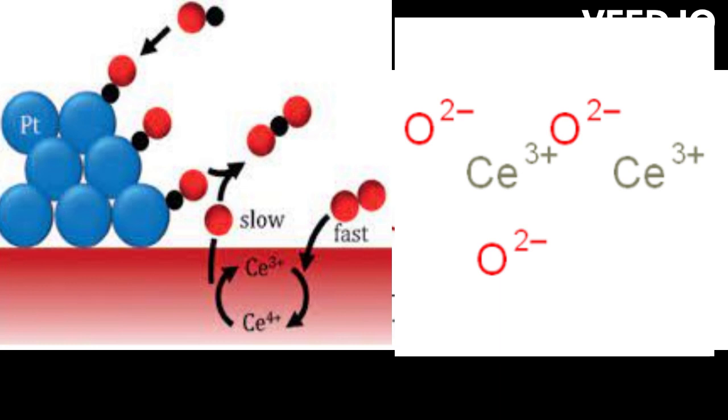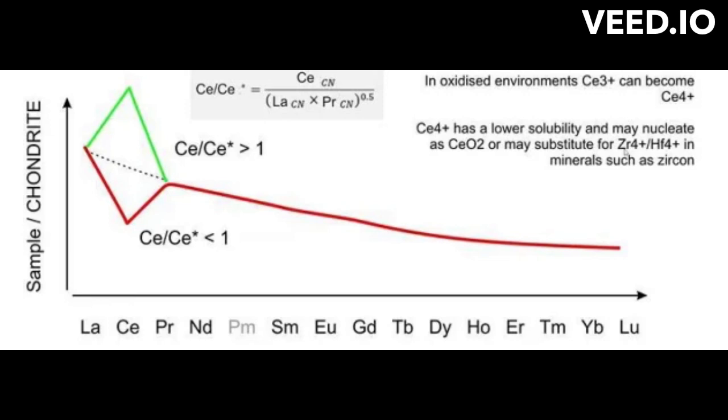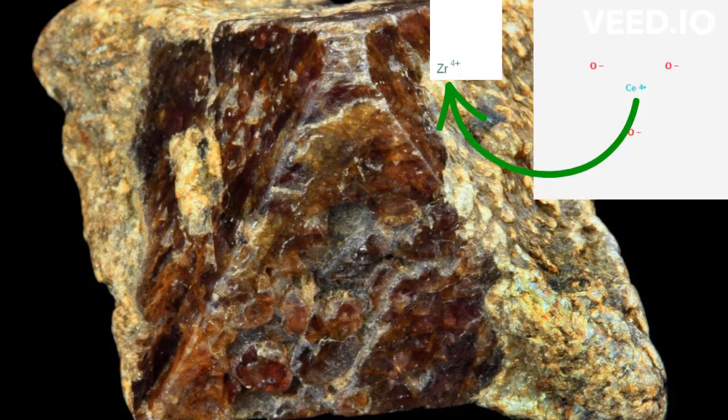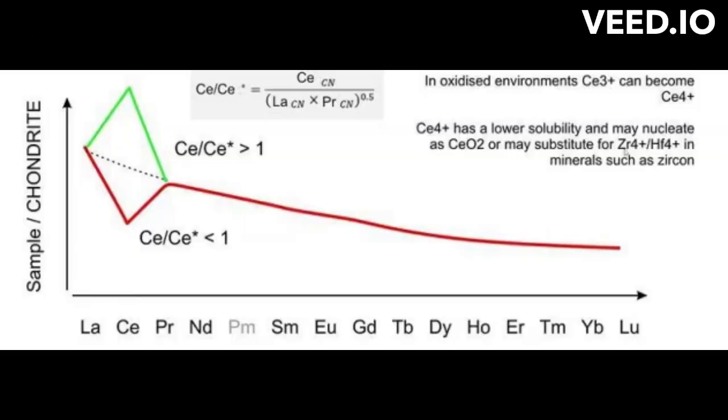Cerium can occur in nature as Ce3+ or Ce4+ ion and is a compatible element at 4+ valency in zircon and less commonly in silica. Because of this, terrestrial zircons commonly show a positive cerium anomaly due to the incorporation of Ce4+ into zircon, which is because Ce4+ has the same charge and a similar ionic radius as Zr4+.